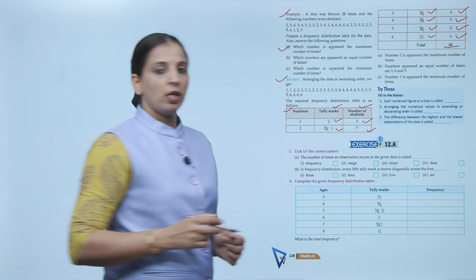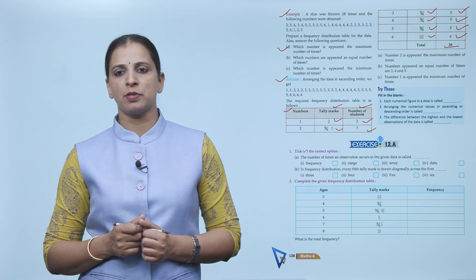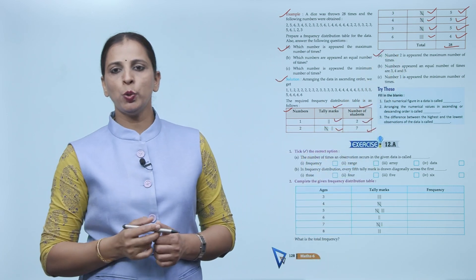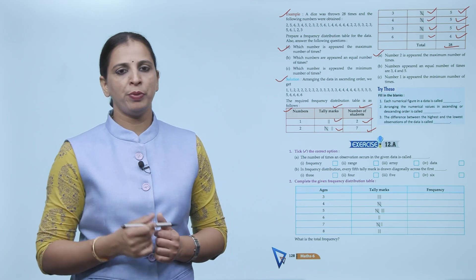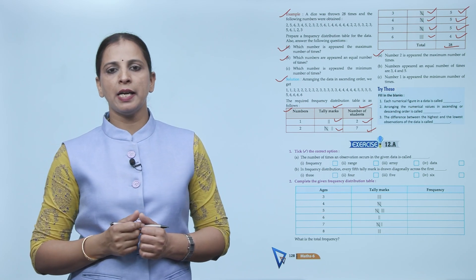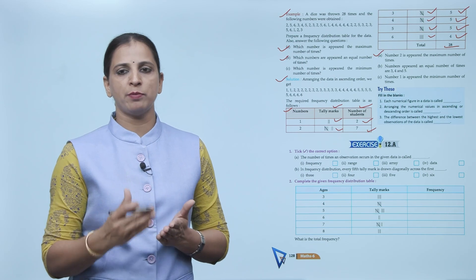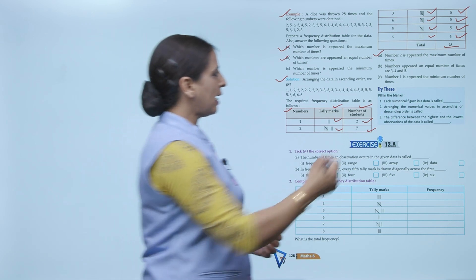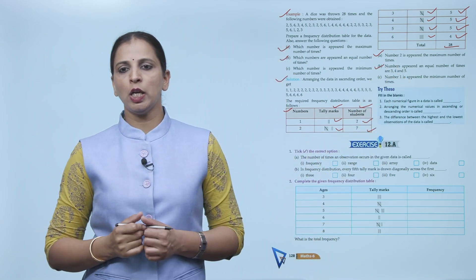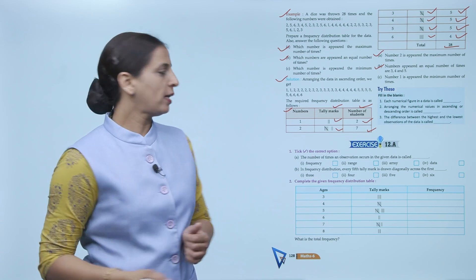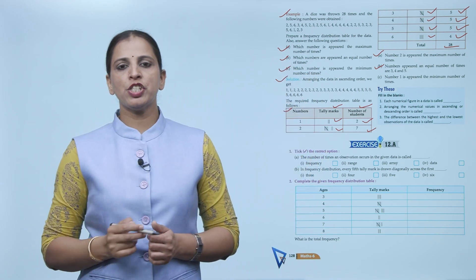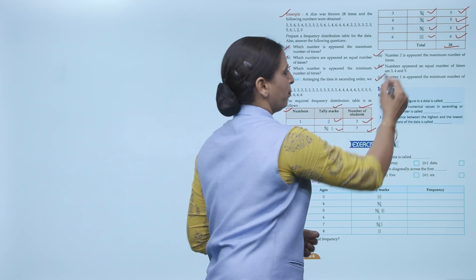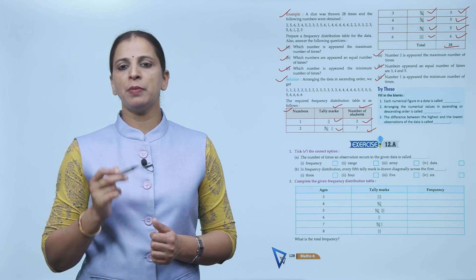Answering the questions: (a) Which number appeared the maximum number of times? — Number 2 appeared the maximum number of times (frequency = 7). (b) Which numbers appeared an equal number of times? — Numbers 3, 4, and 5 each appeared 5 times, so numbers 3, 4, and 5 appeared an equal number of times. (c) Which number appeared the minimum number of times? — Number 1 appeared the minimum number of times (only 2 times).